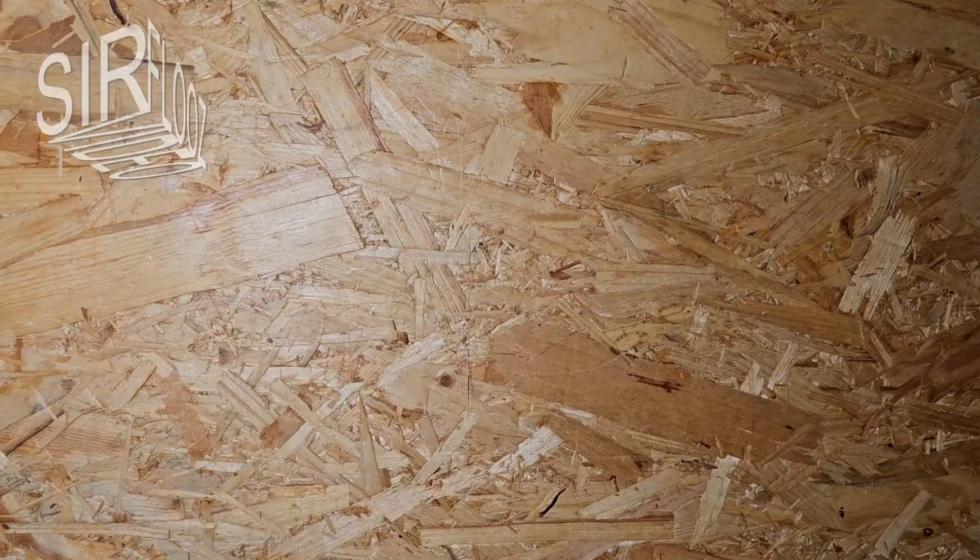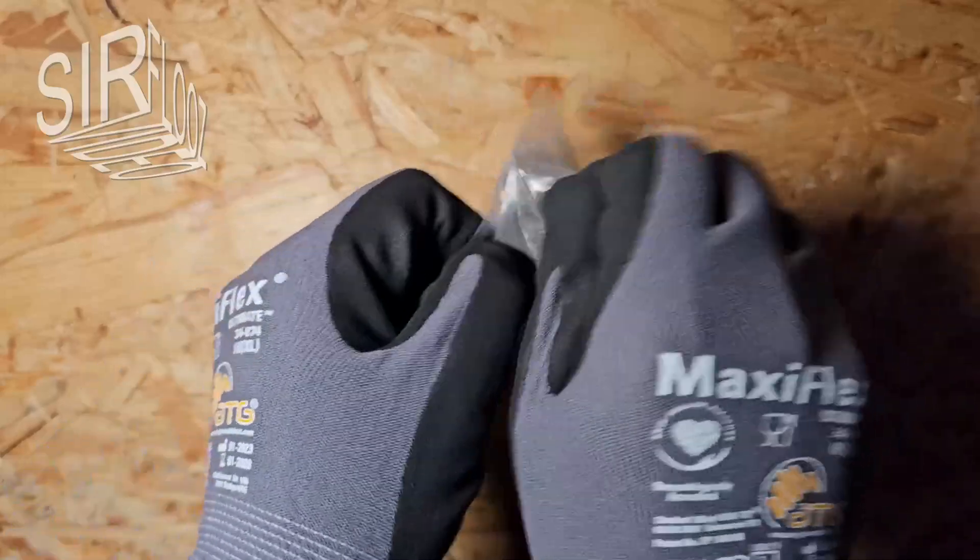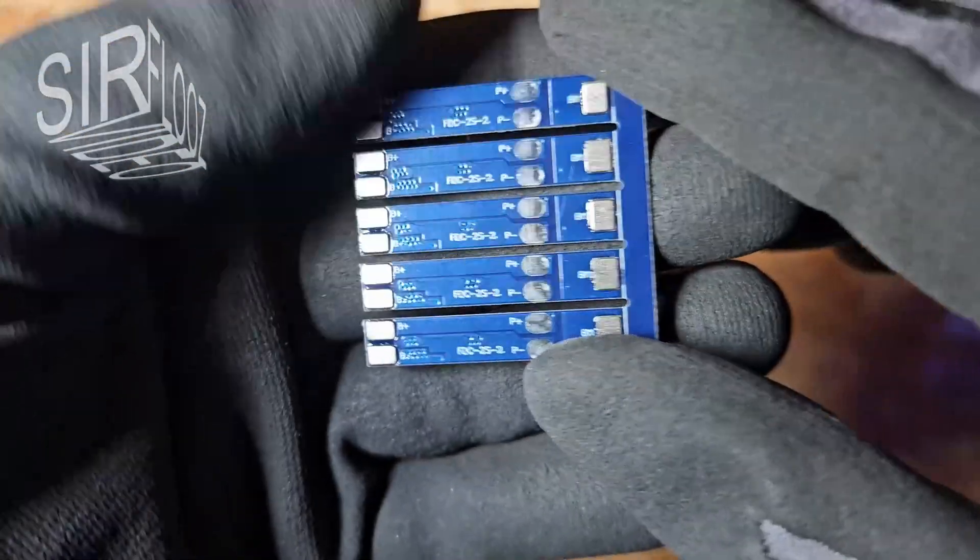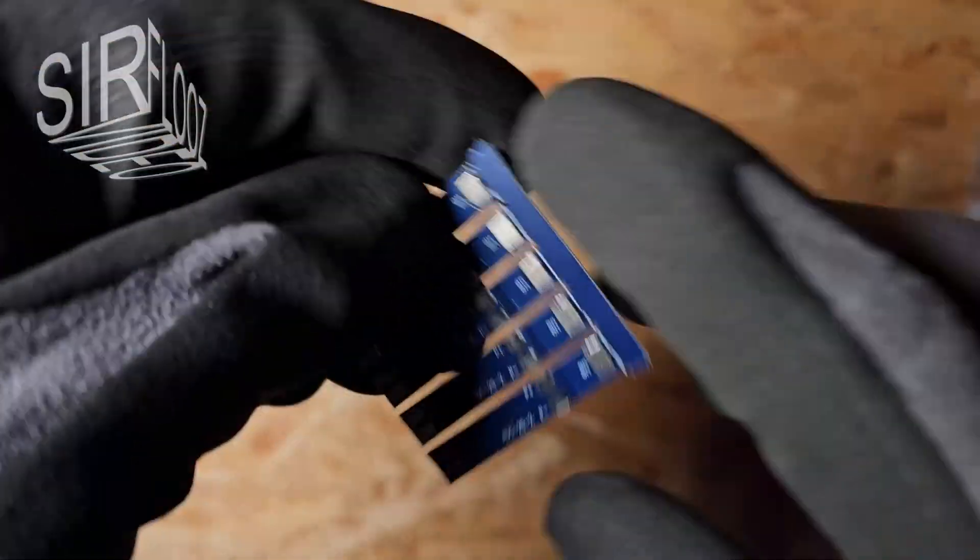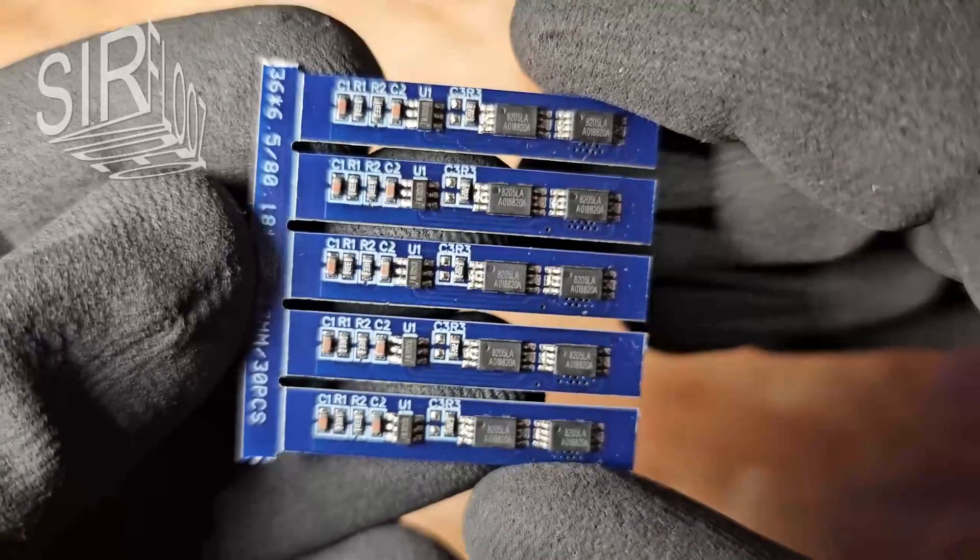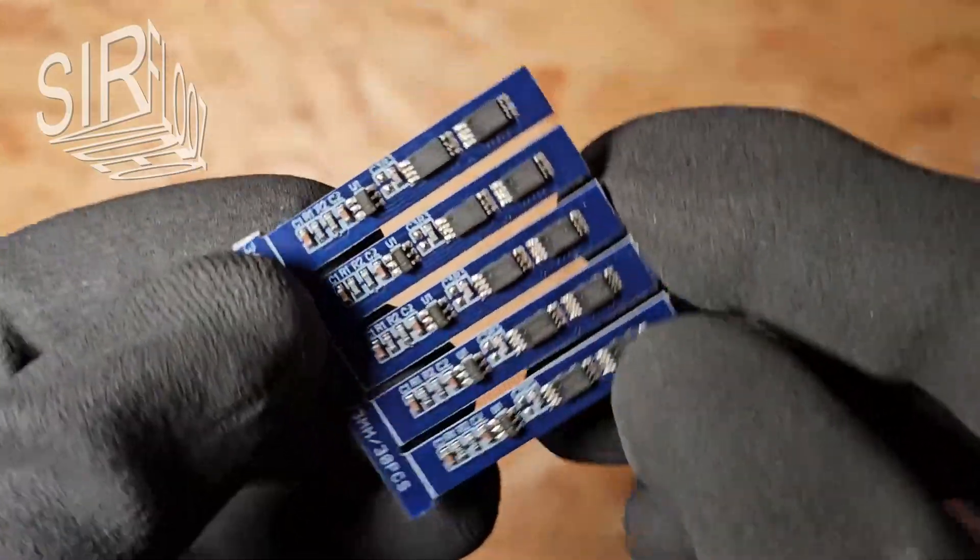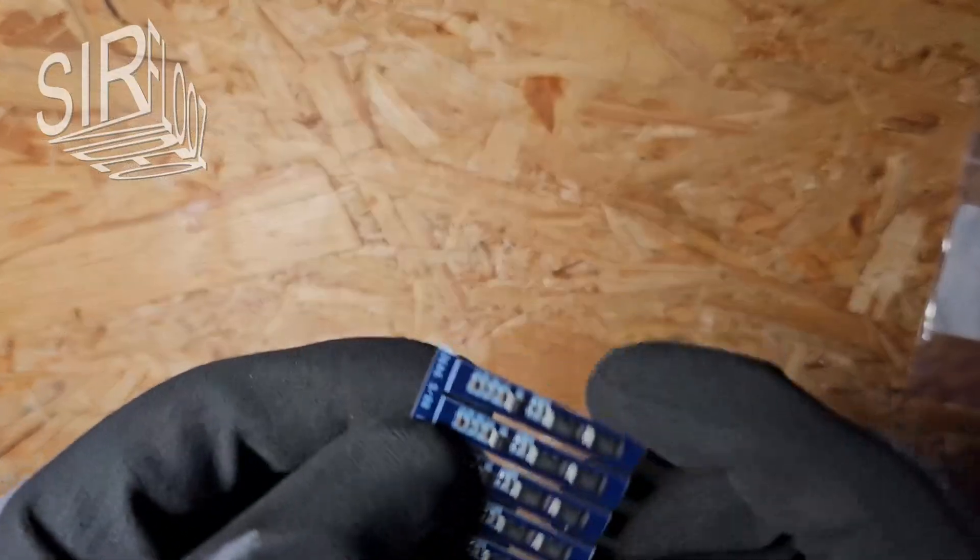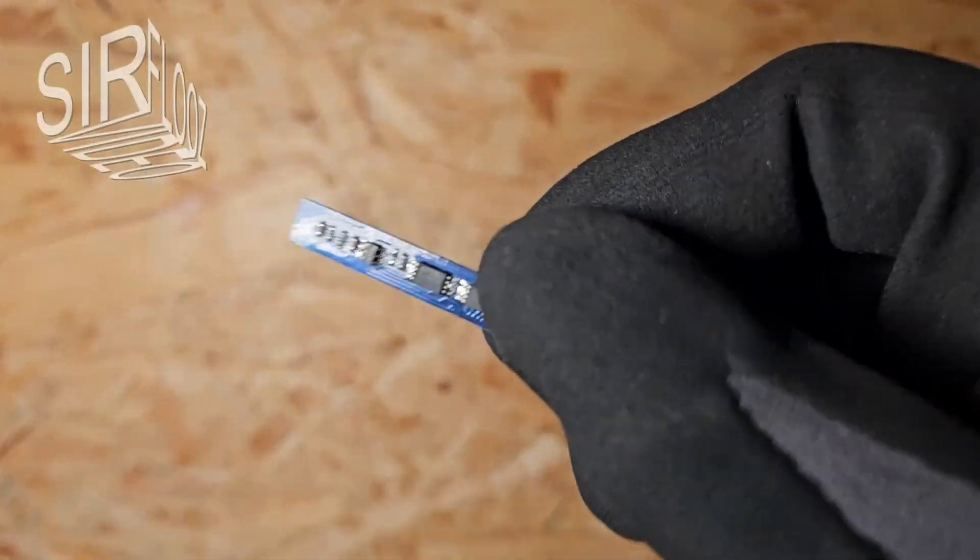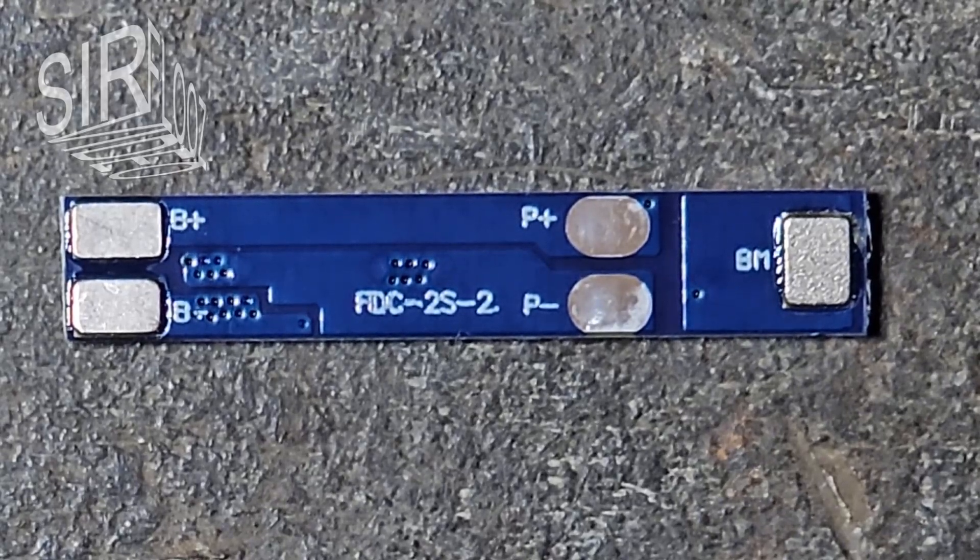The modules have now arrived. This is what they look like. I will get them out of the package. The workmanship looks good. I don't see any bad solder joints or short circuits, very pleasing. But now I can break off a module from the panel. Here you can see the connections in detail. Here I now have to solder cables to test the module.